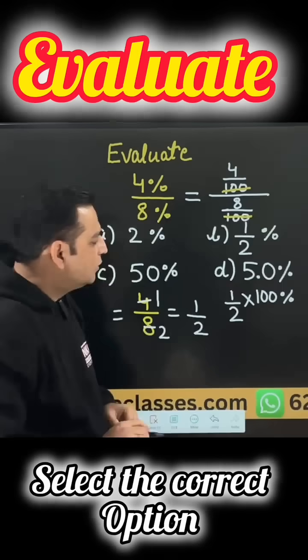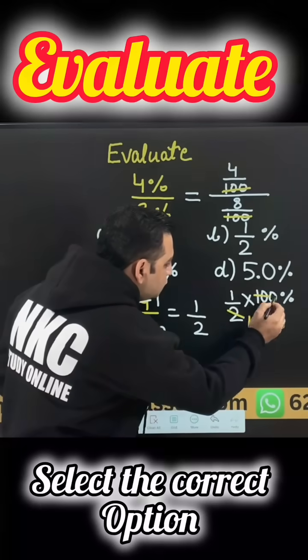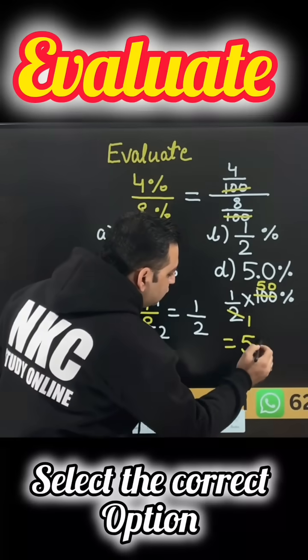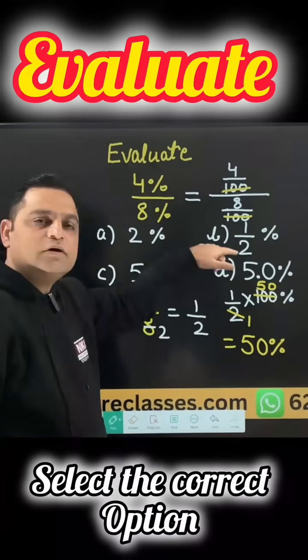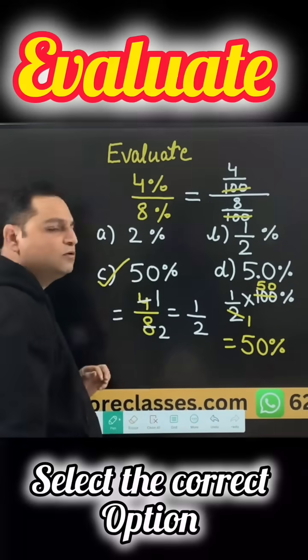in percentages. Now this 100 over 2, if you reduce to the lowest form, you simplify them, you are getting 50 and obviously the percent sign along with it. So according to the options, when you are going to check, option c is the correct option.